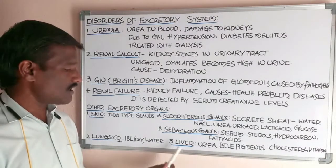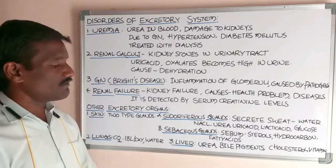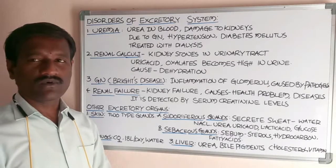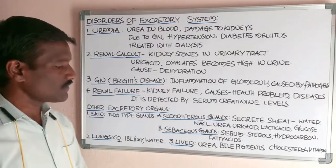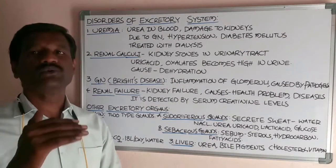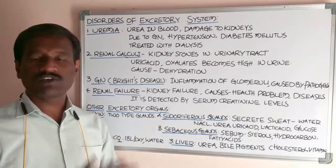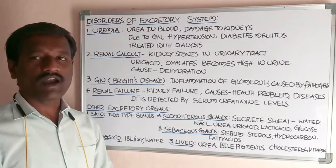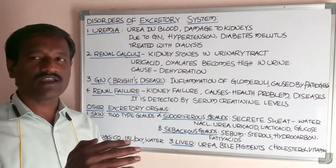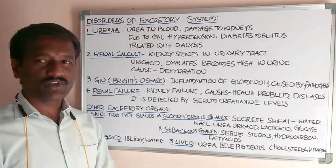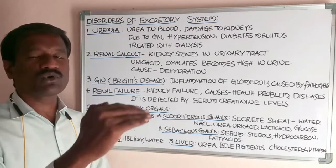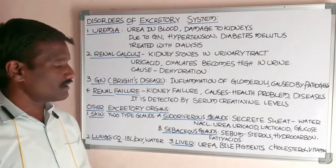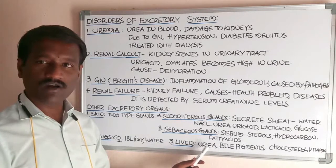The third additional excretory organ is the liver, which is the main gland in the body, located on the right side of the upper body cavity. The liver forms urea — excess amino acids present in the body undergo metabolic activity and urea is produced by the liver cells. This urea is then transported to the kidneys, the main excretory organs, for elimination. Formation of urea is a main important function of the liver.